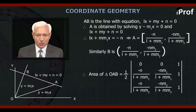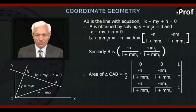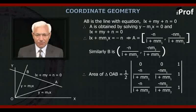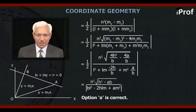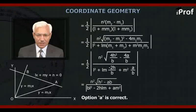The area of triangle OAB equals half the determinant with rows (0, 0, 1), (-N/(L + M·M1), -N·M1/(L + M·M1), 1), and (-N/(L + M·M2), -N·M2/(L + M·M2), 1). This simplifies to (1/2) · N² · (M2 - M1) / ((L + M·M1)(L + M·M2)).